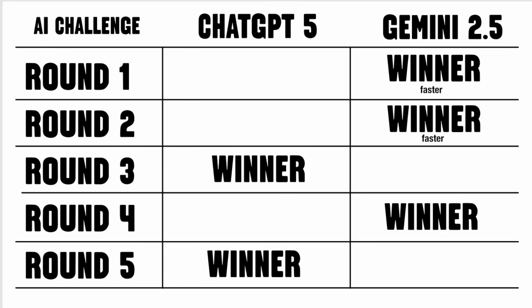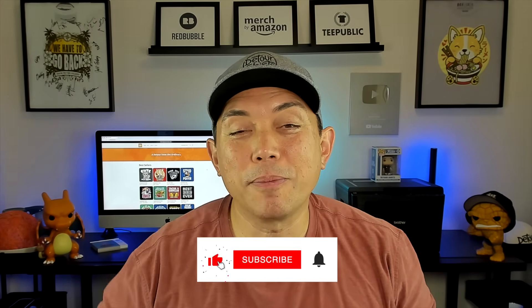So for the overall AI challenge, I'm giving it to Gemini — mainly because it was faster in rounds one and two for graphics. In round three, ChatGPT did a better job laying out the skeleton niche ideas. Round four, Gemini was better at generating creative sayings. Round five, ChatGPT laid out the Amazon listing better. Let me know in the comments if you think I picked the right winner, and if you want to see a head-to-head graphics-only challenge in the future. Thanks for watching — keep creating and keep learning!